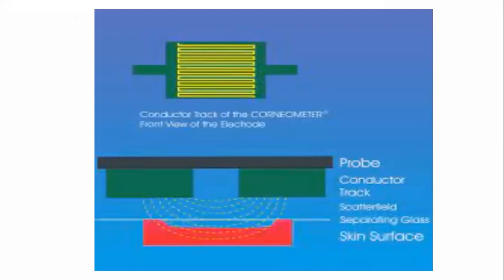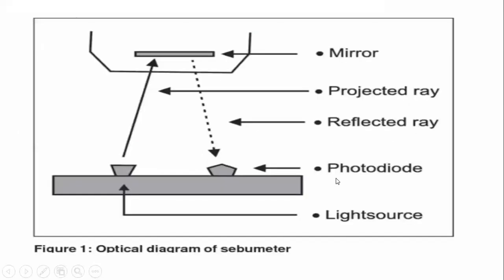The instrument consists of a mirror-like structure inside the device. After placing the cassette, it transmits a projected ray that touches the sebum film or sebum layer on the cassette tape. The ray is then transmitted through the tape and sebum film and reflected back, where it is caught by a photodiode. The principle is similar to a spectrophotometer — the amount of reflected ray measures the amount of sebum present.